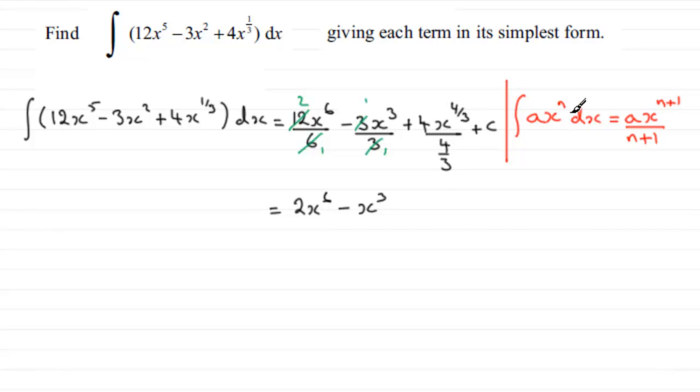Multiplying the top by 3 gives us 4 times 3, which is 12. Multiplying the bottom by 3 means four-thirds times 3 gives us 4. So we have 12 over 4 times x to the power of four-thirds, plus the constant of integration.